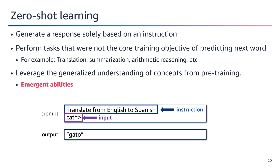Zero-shot learning refers to the ability of large language models to generate responses solely based on instructions without being explicitly shown demonstrations of the task at hand. This allows models to perform tasks not part of their core training objective, such as translation, summarization, and arithmetic reasoning. The models leverage their generalized understanding of concepts acquired during pre-training. For example, when prompted with 'Translate from English to Spanish' and given the input 'cat', the model can generate 'gato' by drawing upon its understanding of language and translation.